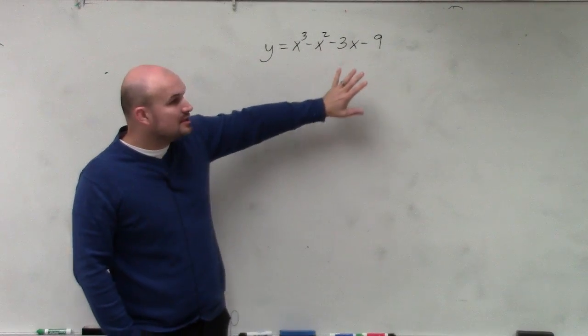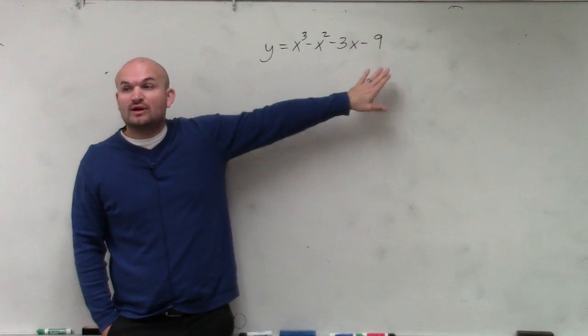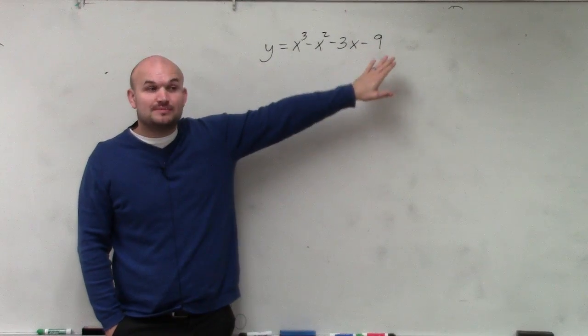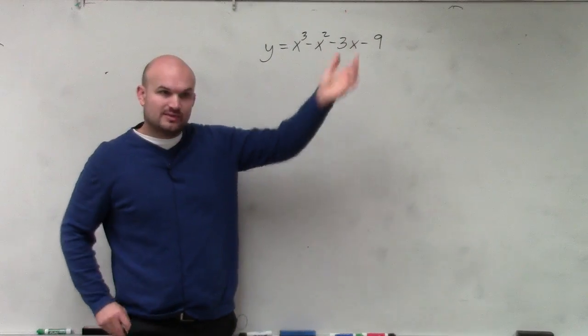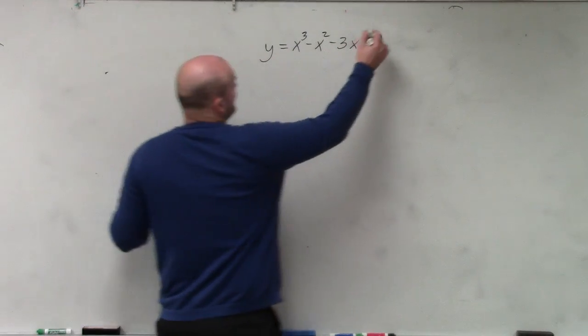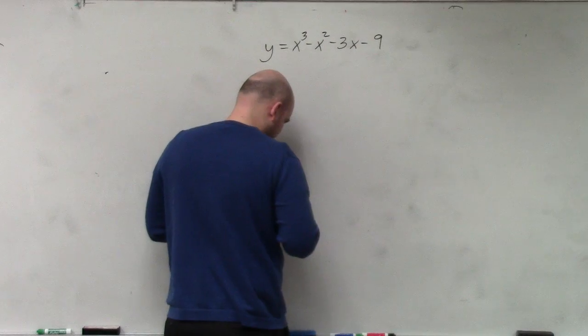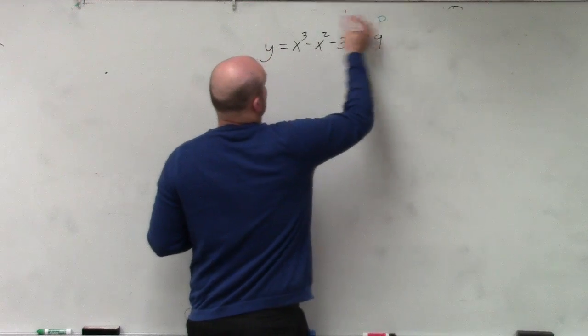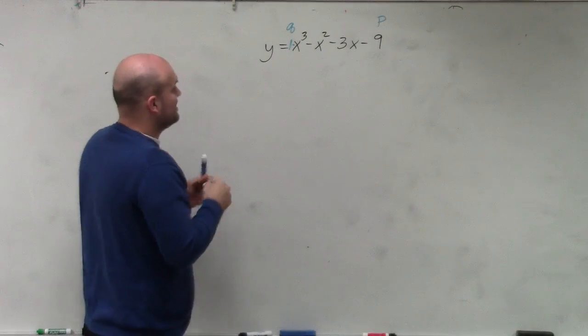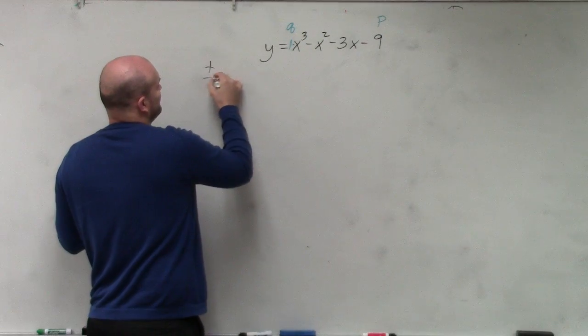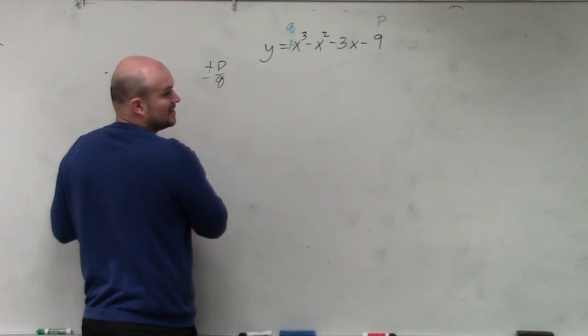So the only thing I told you was we can determine what the possible rational zeros are by using the rational zero test, correct? That's what we did last class period. So I would identify my p and my q first. And then my p or my q is going to be the factors of p over q. This was on your homework.